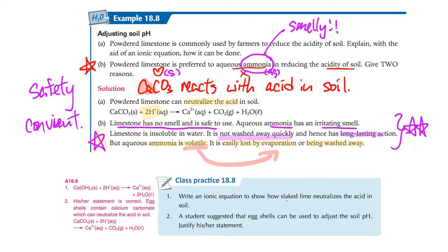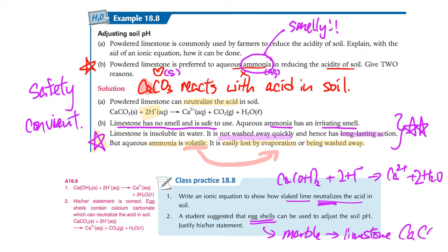Write an equation for how slaked lime neutralizes the acid. Slaked lime is calcium hydroxide. We can use 'neutralize' this time. It's easy, we've done this already. Number two: students suggest that eggshells can be used to adjust soil pH. Remember, eggshells, marble, and limestone are all calcium carbonate. Can they be used to adjust soil pH? Of course yes, because it's just like liming the soil. That's it.